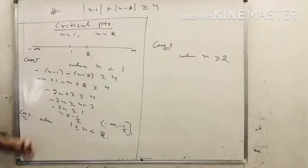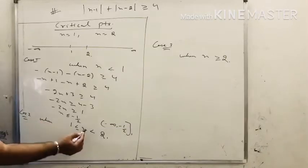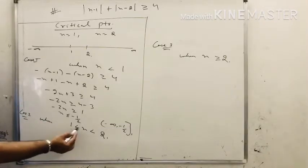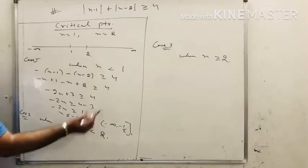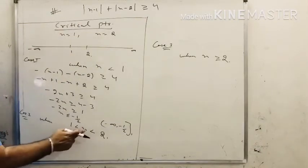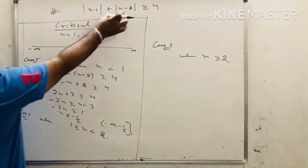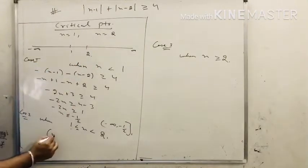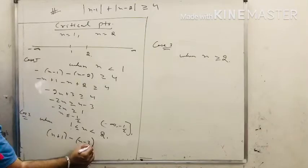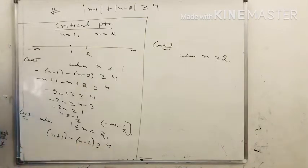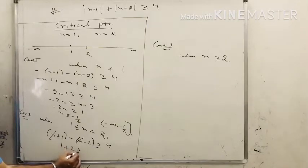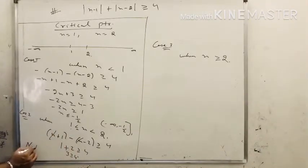Case 2: the value of x is greater than 1 but less than 2. Since x is greater than 1, the first modulus is positive; since x is less than 2, the second is negative. This gives x minus 1 plus minus x plus 2 greater than or equal to 4. The x terms cancel, leaving 1 greater than or equal to 4. This is not possible, so no solution in this range.